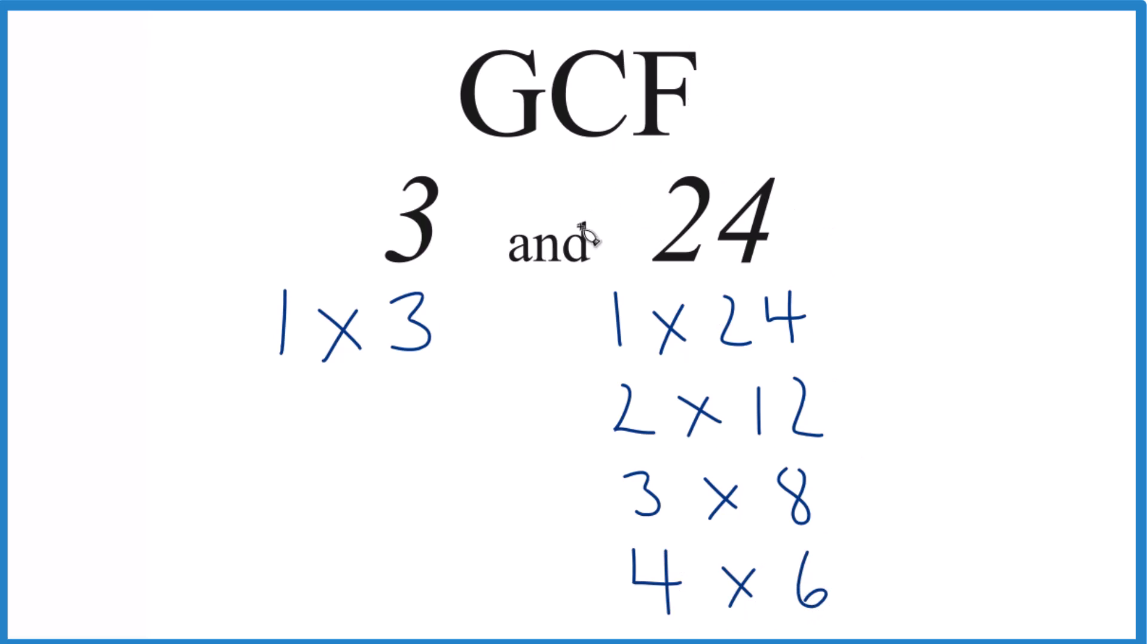So we have our factors. What's in common between 3 and 24? So 1, that's in common. And then 3, that's in common. And 3 is the greatest common factor between 3 and 24.